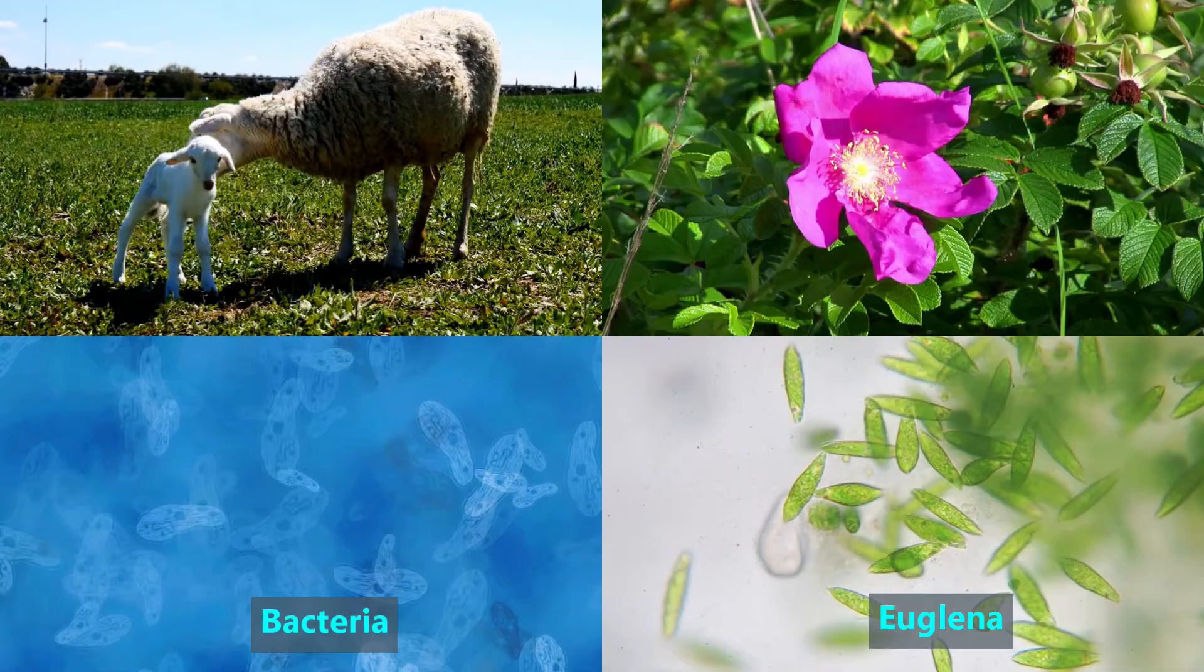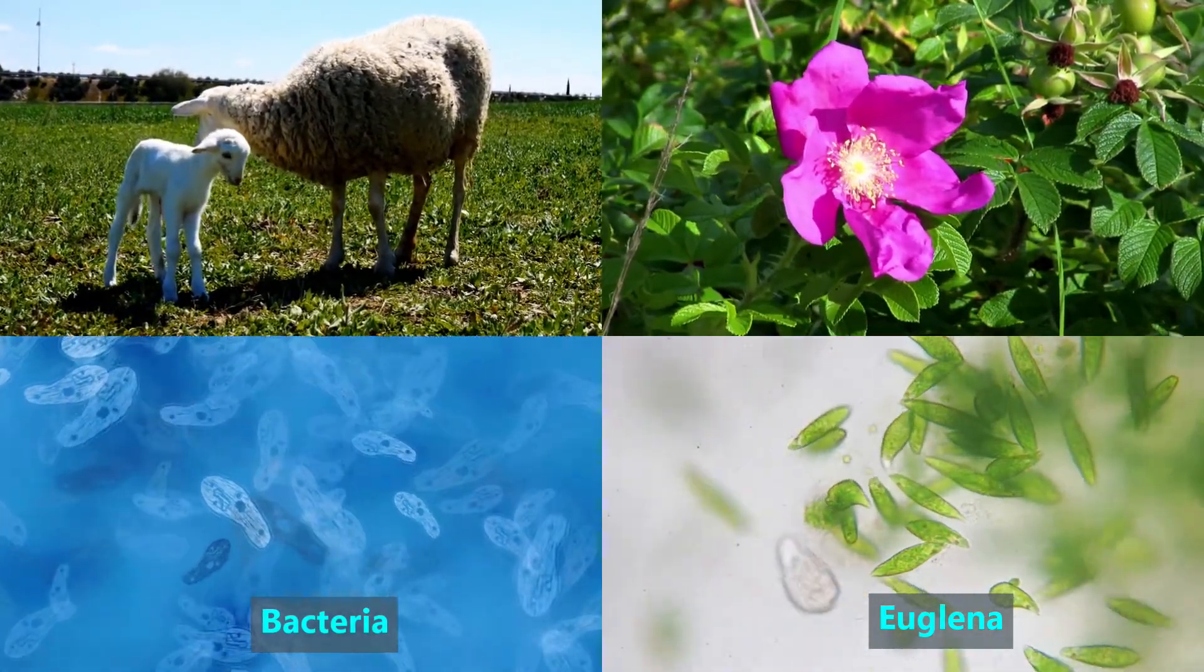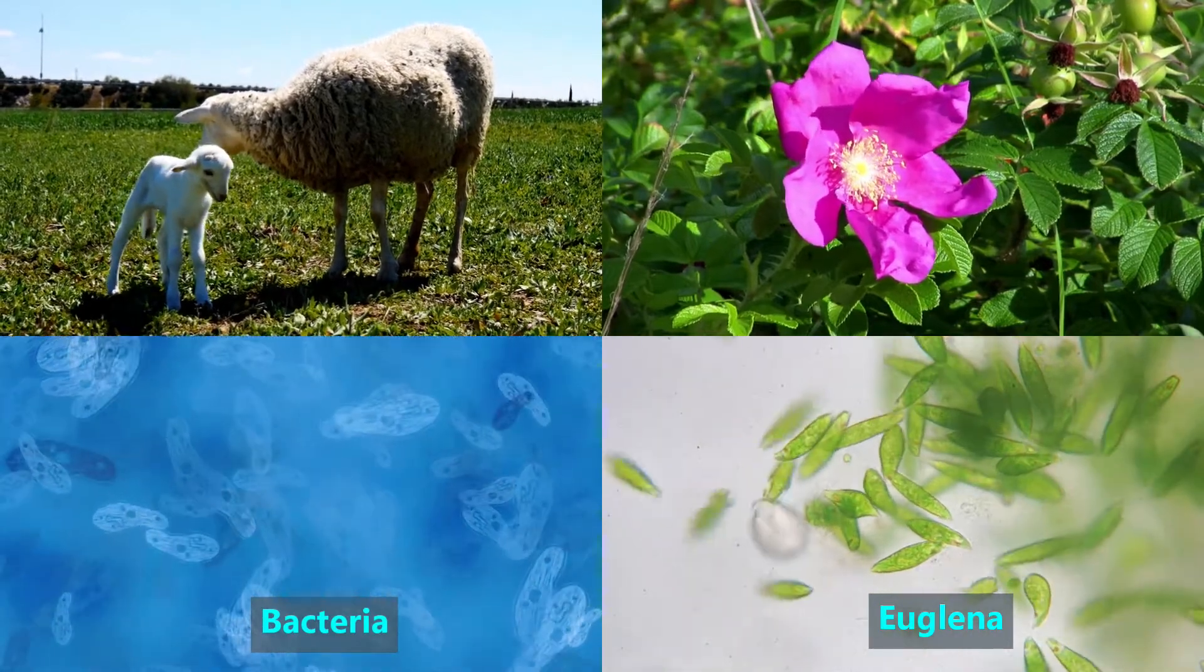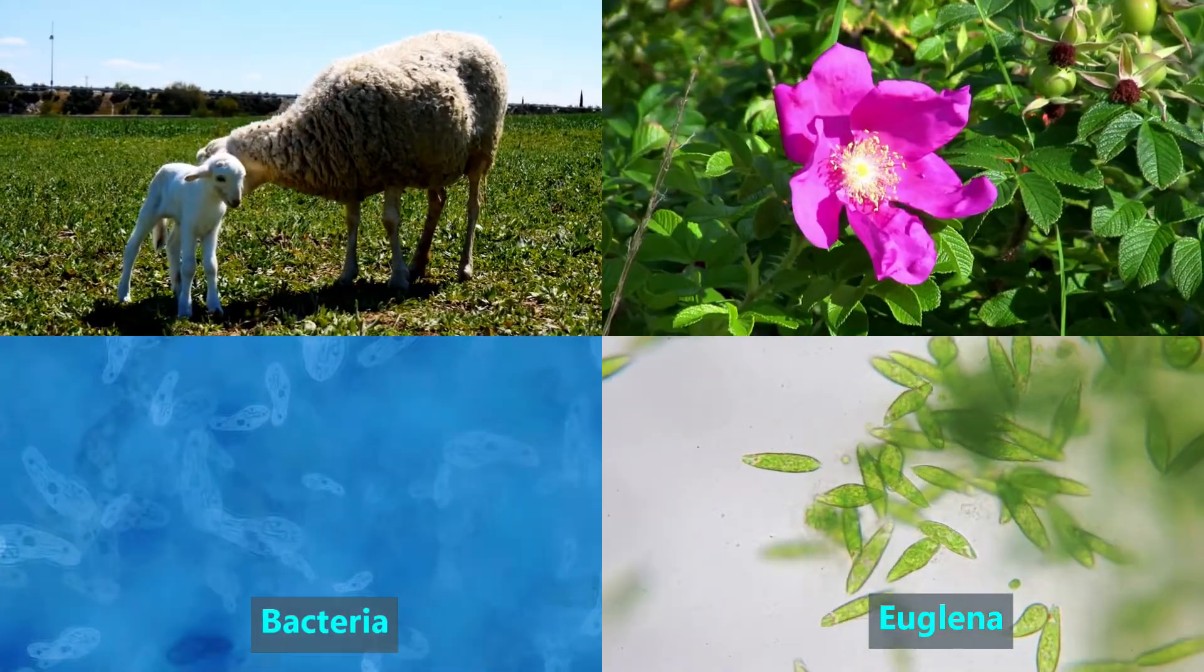All animals, plants, and some single-cell organisms, such as bacteria and euglena, are made of cells. A cell is a unit of life that has a specific structure and function. Cells are very tiny, so usually too small to see without a microscope.